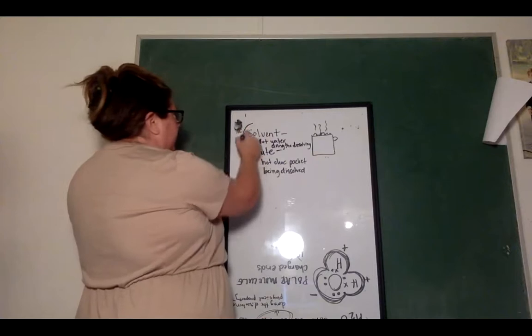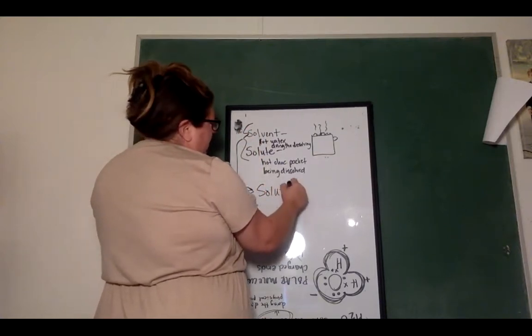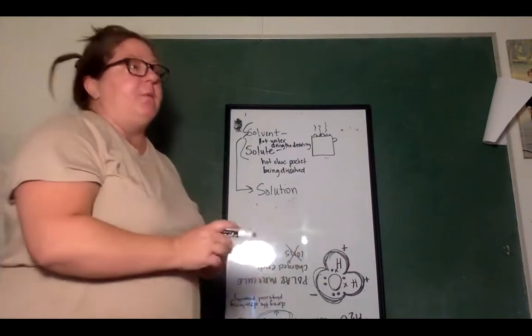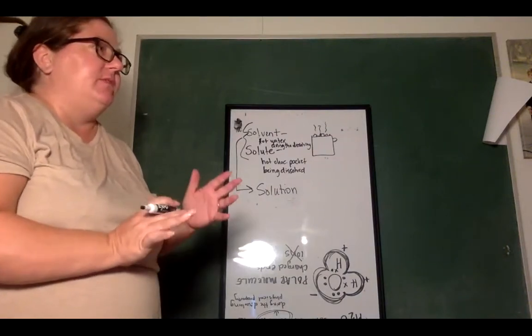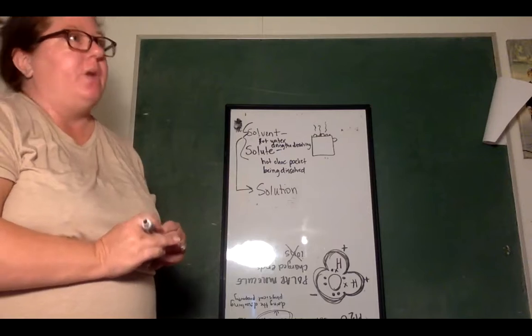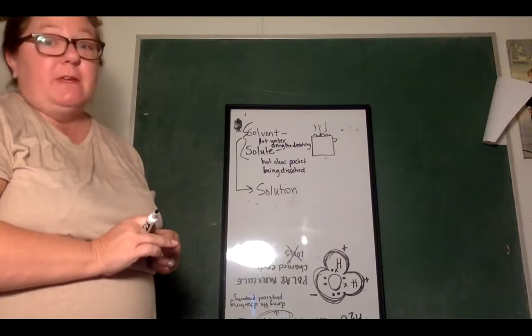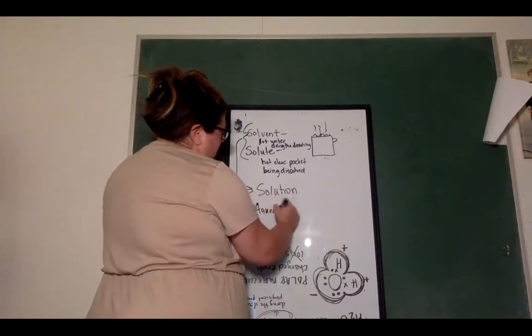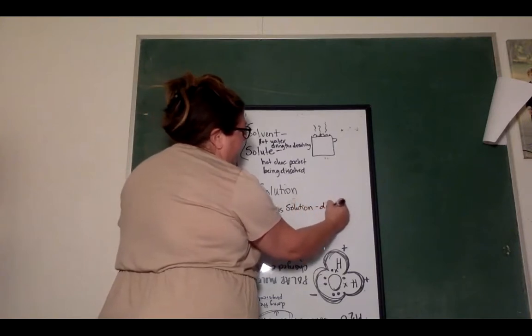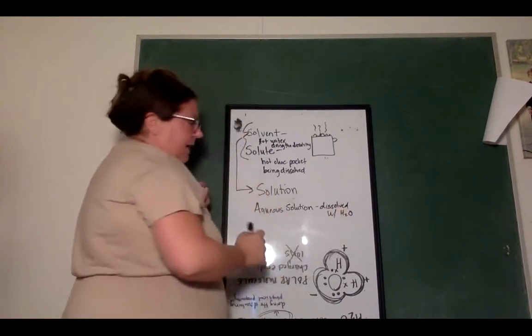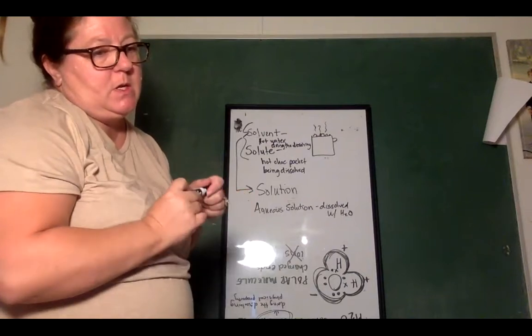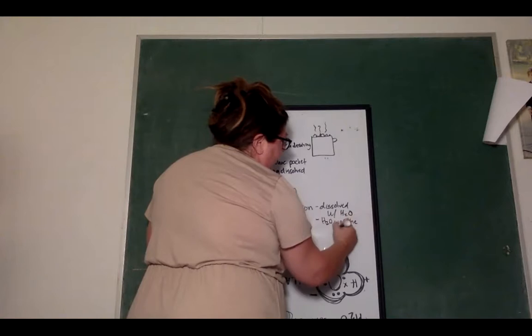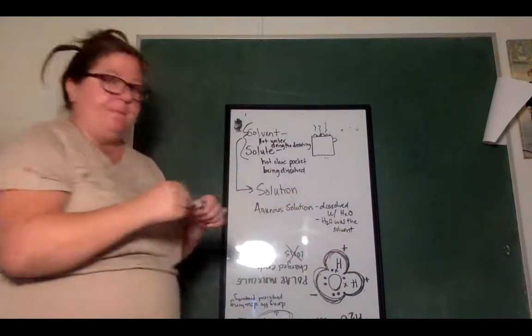And once you have these two things together, you have created a solution. Now solutions can use other things to dissolve. You can use ammonia in the lab, or you can use lots of different liquids in reactions. Well, it wouldn't be a reaction, but you can use other liquids. Normally it is water. But when it is water, we call it an aqueous solution, meaning that it was specifically dissolved with water. And by there, I mean that water, let's write this down too. Water was the solvent that we are using our vocabulary terms.